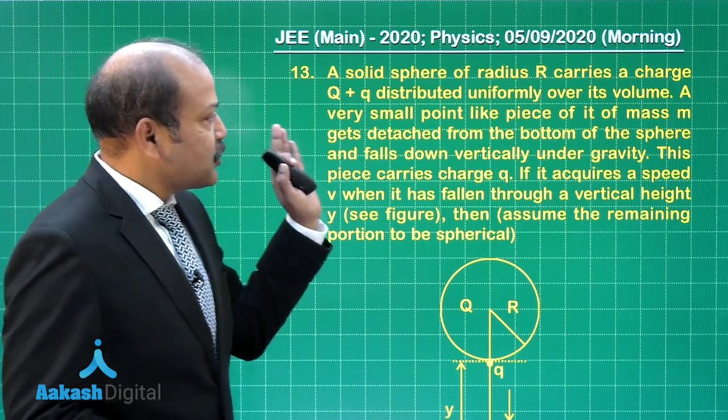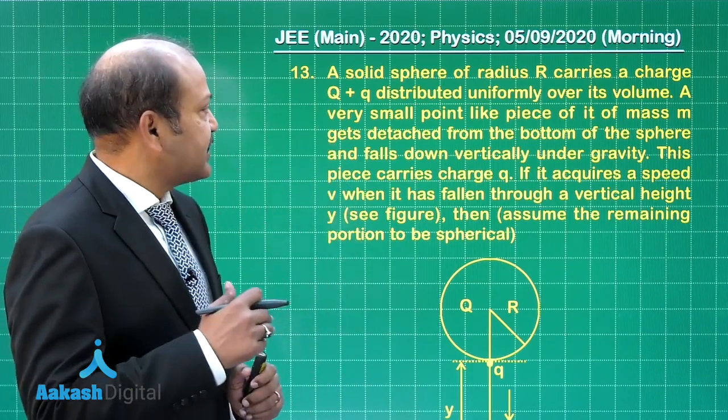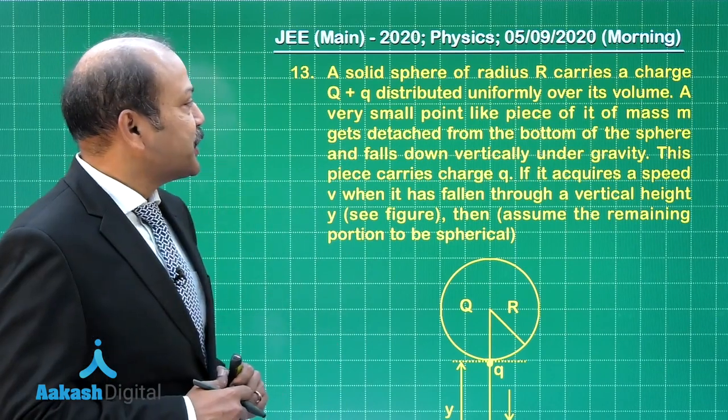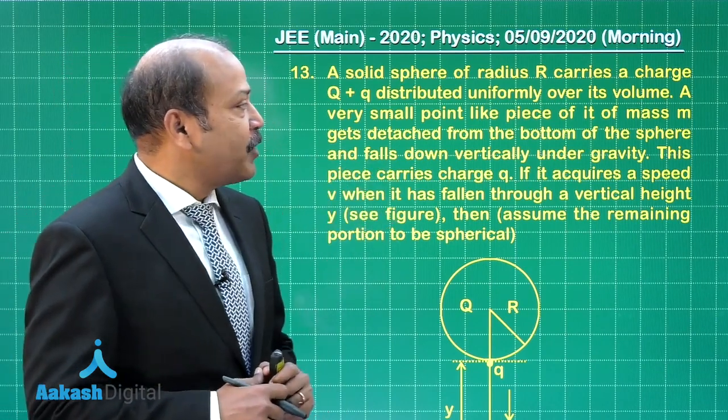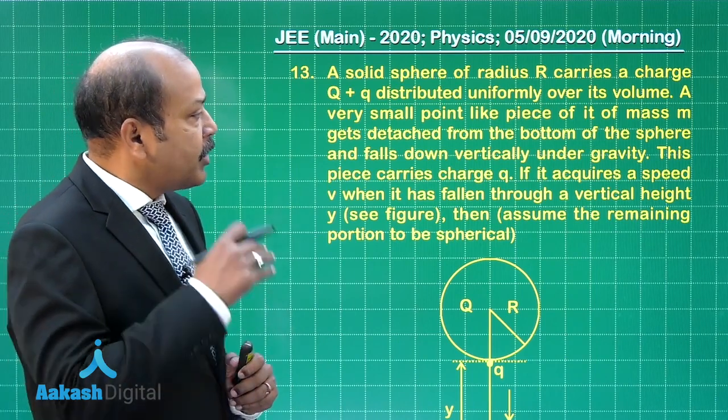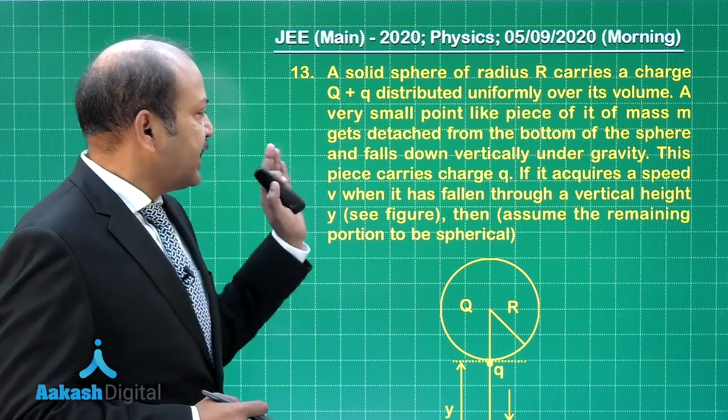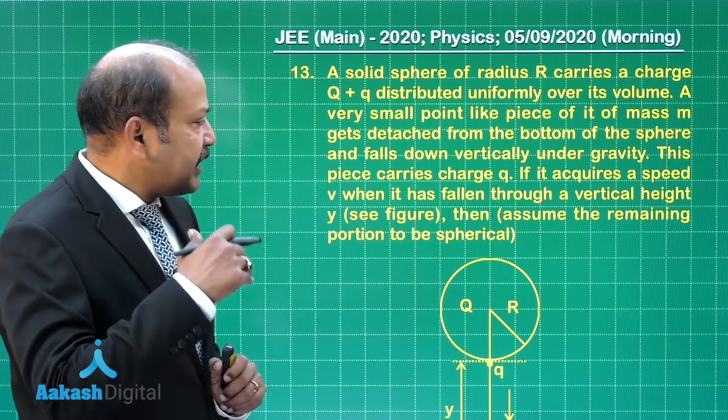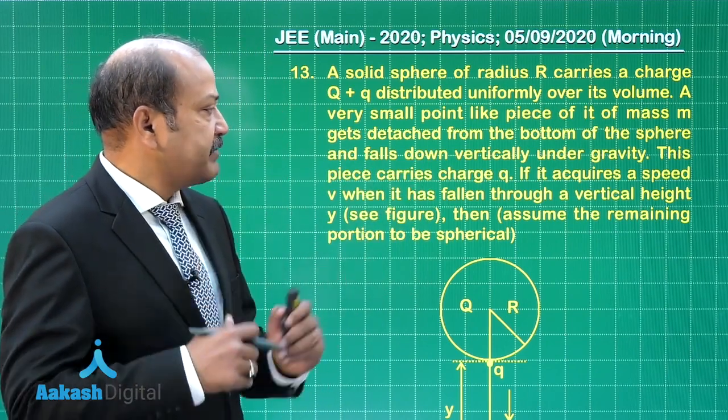Question 13 says a solid sphere of radius r carries a charge capital Q plus small q distributed uniformly over its volume. A very small point-like piece of it of mass small m gets detached from the bottom of the sphere and falls down vertically under gravity.